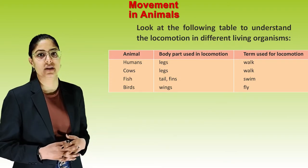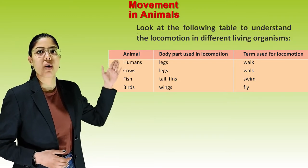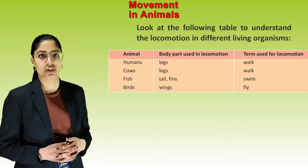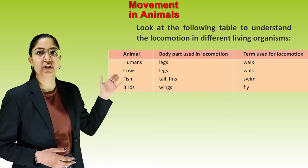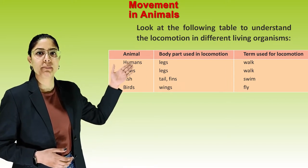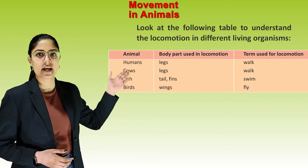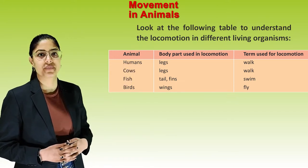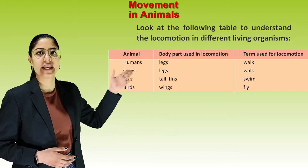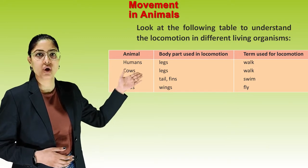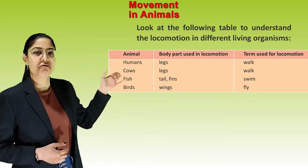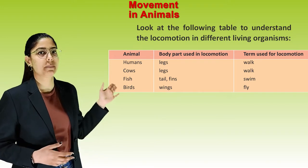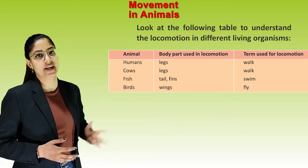See this table. Animals, body parts used in locomotion, term used for locomotion. Humans: legs, walk. Cows: legs, walk. Fish: tail and fins, swim. Birds: wings, fly.